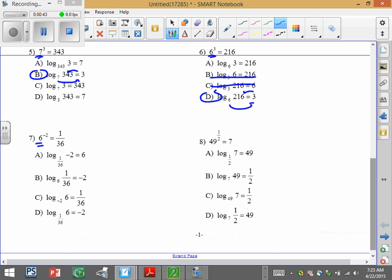We need a base of 6, so we get rid of this one, this one, and this one. And sure enough, 6 to the negative 2 is 1 over 36. And then we need a base of 49, so we get rid of that one, get rid of that one, get rid of that one. 49 to the 1 half equals 7, which is what we needed.